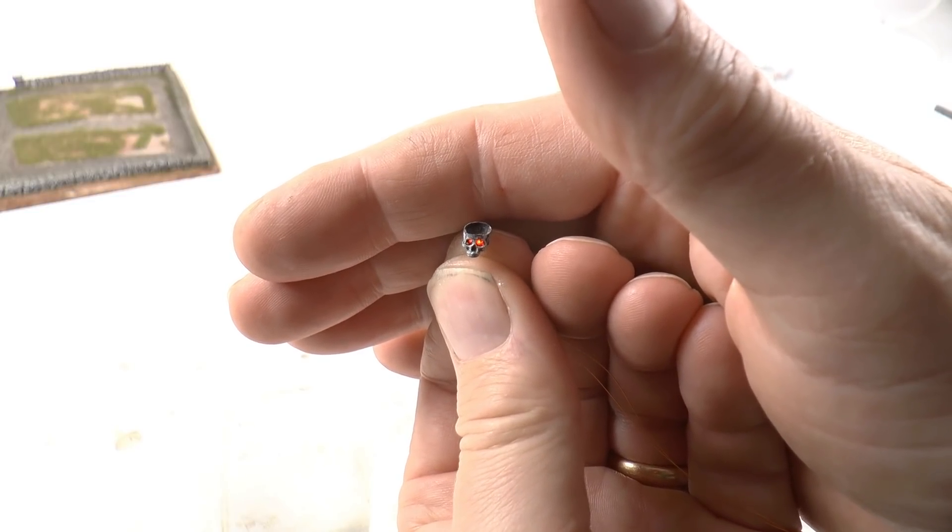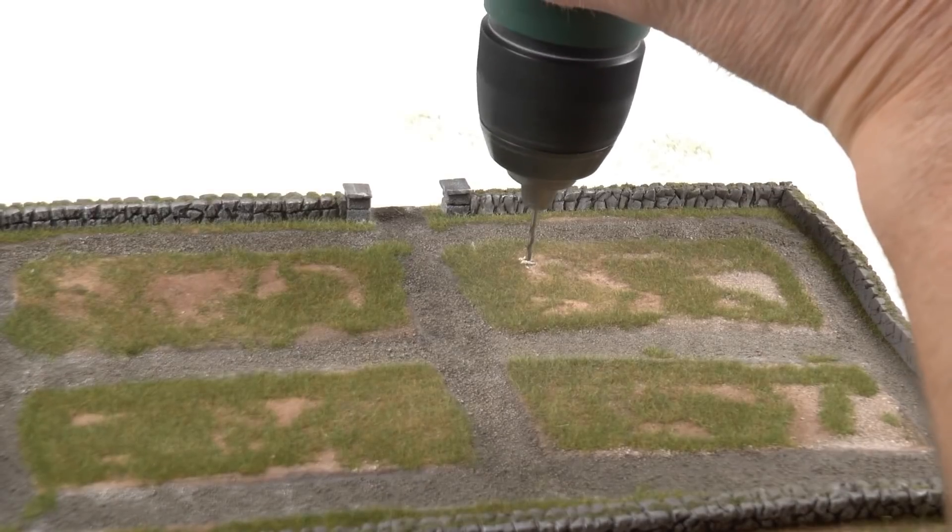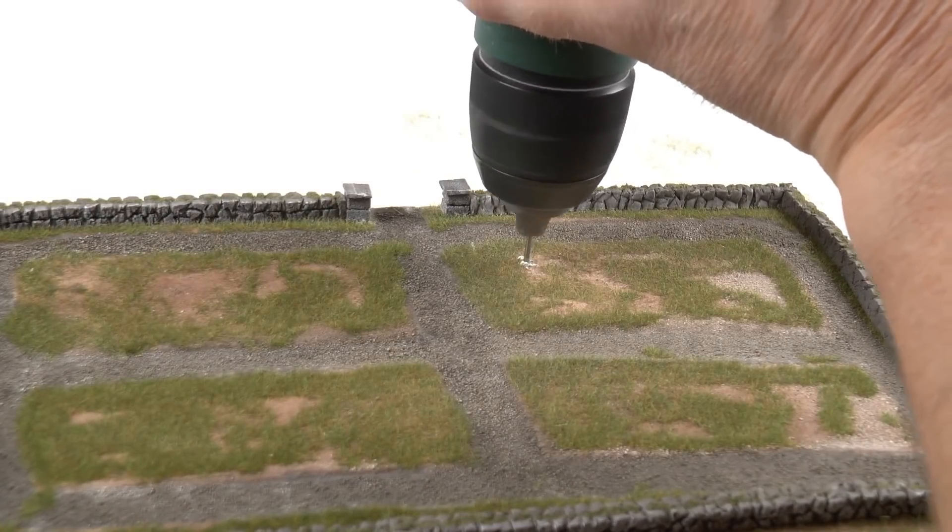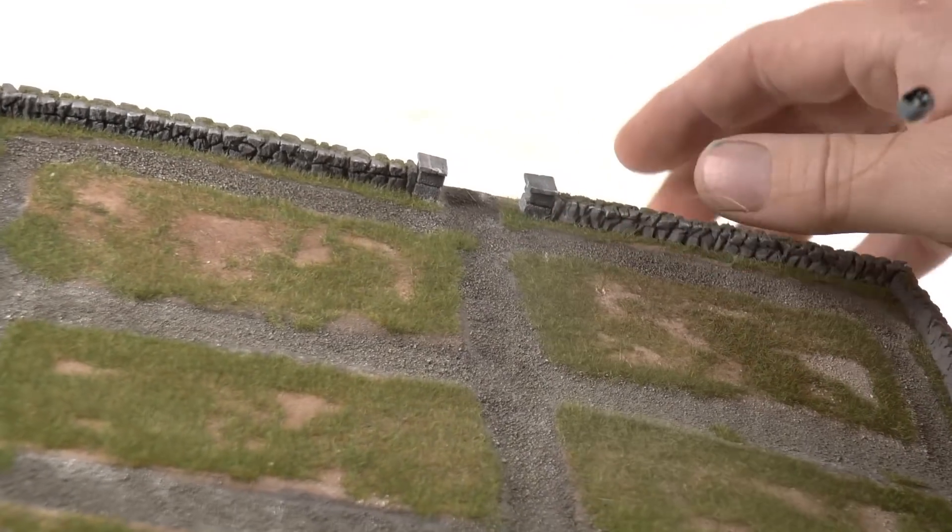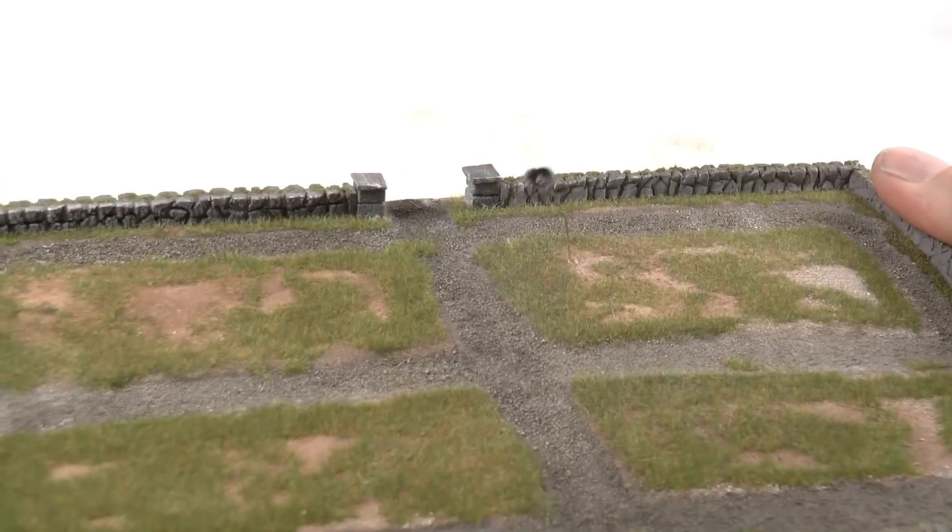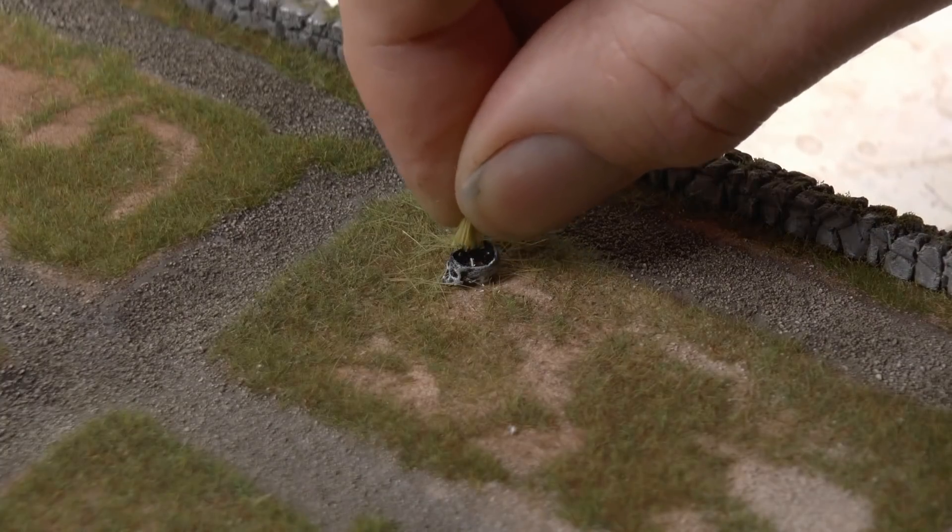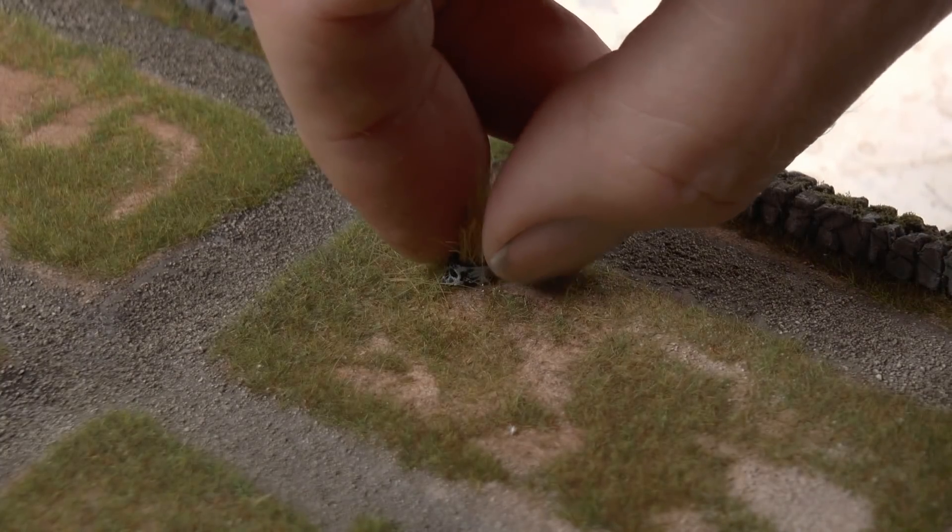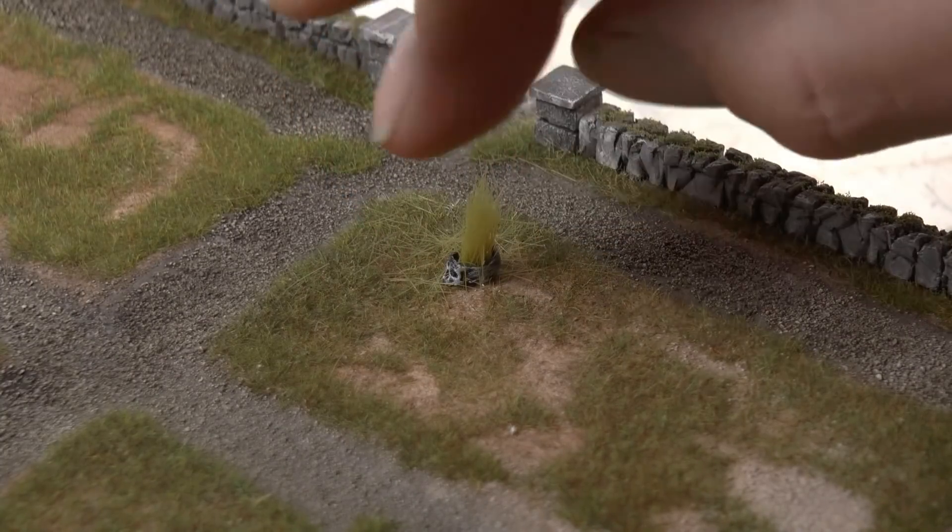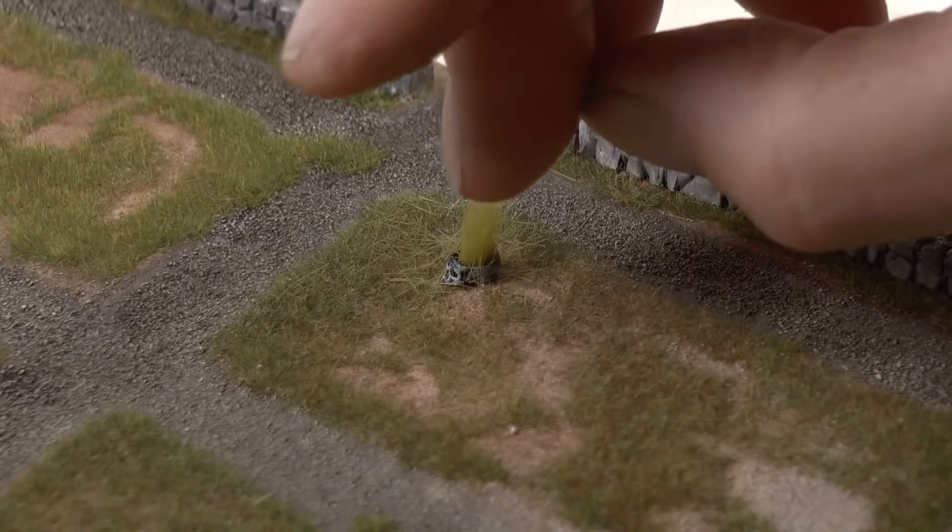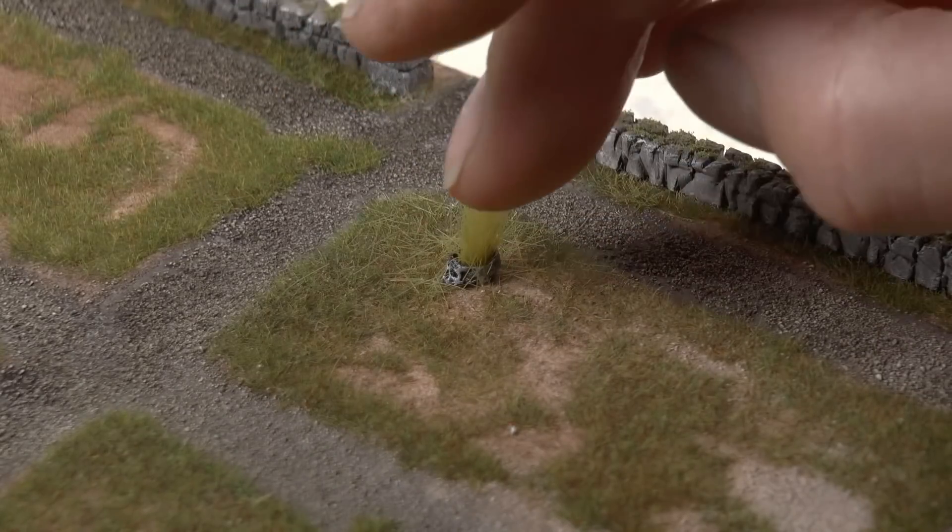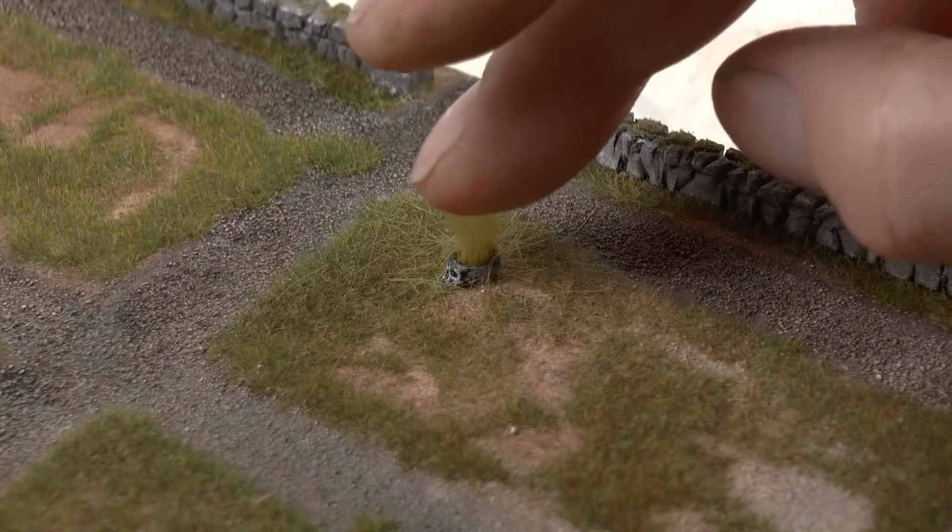The only thing we need to do now is to drill a hole where we want the skull to be. Feed the wires through. And fix the skull in place using fast set glue. And I came up with the idea to have some grass growing inside the skull as well. I mean why not. It's Halloween after all.